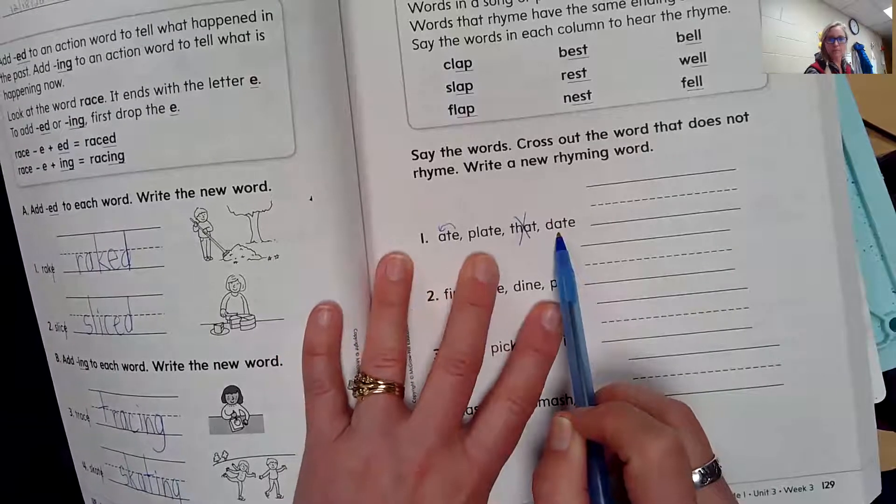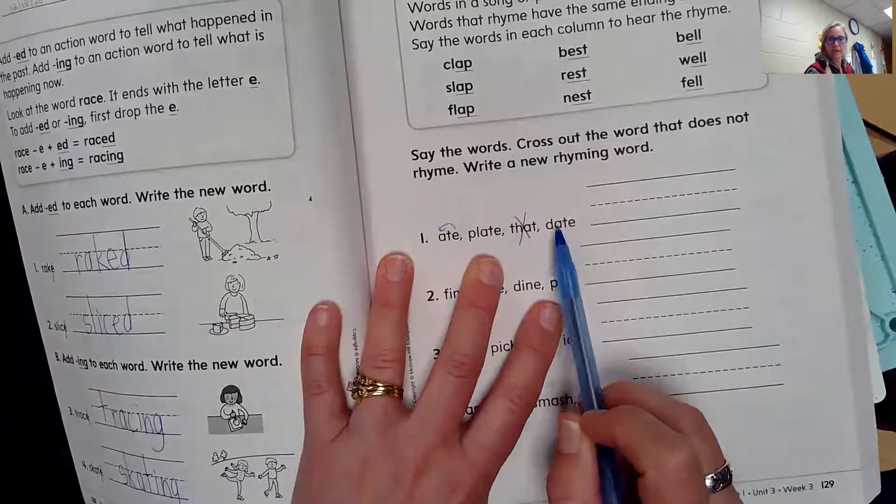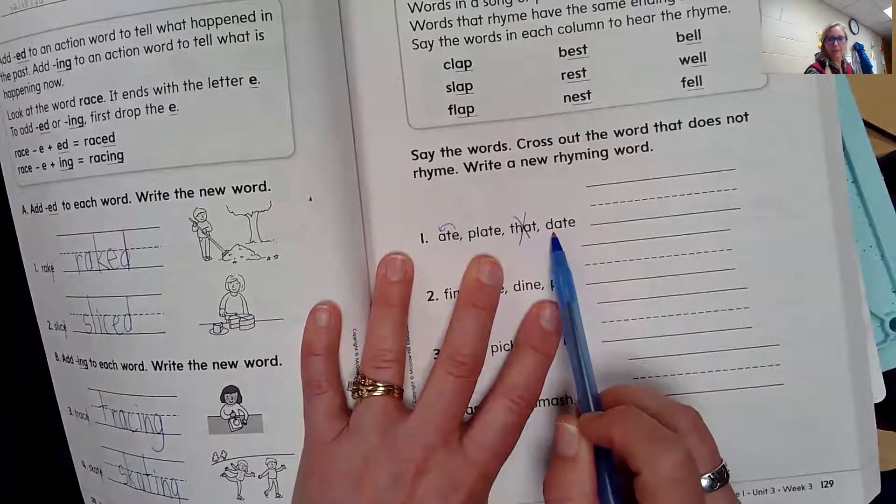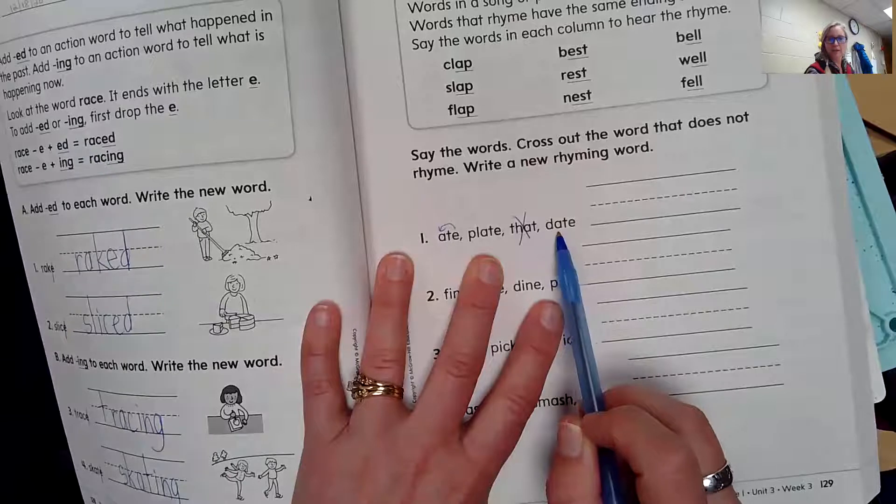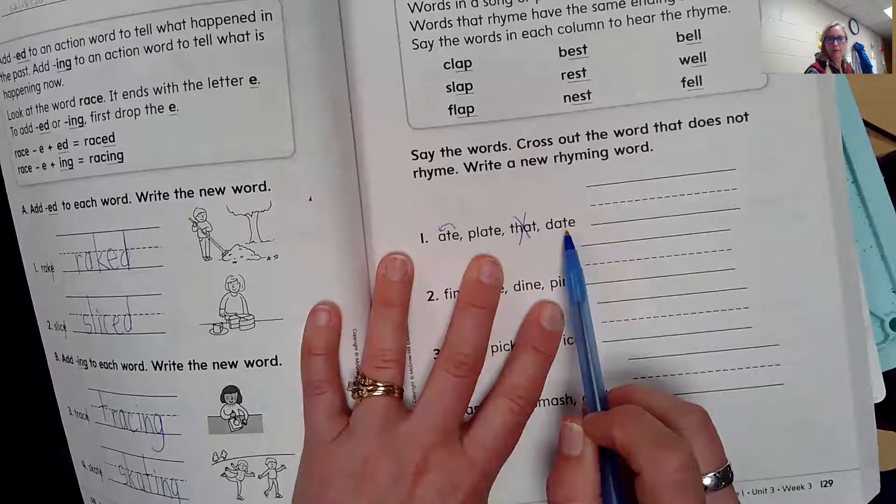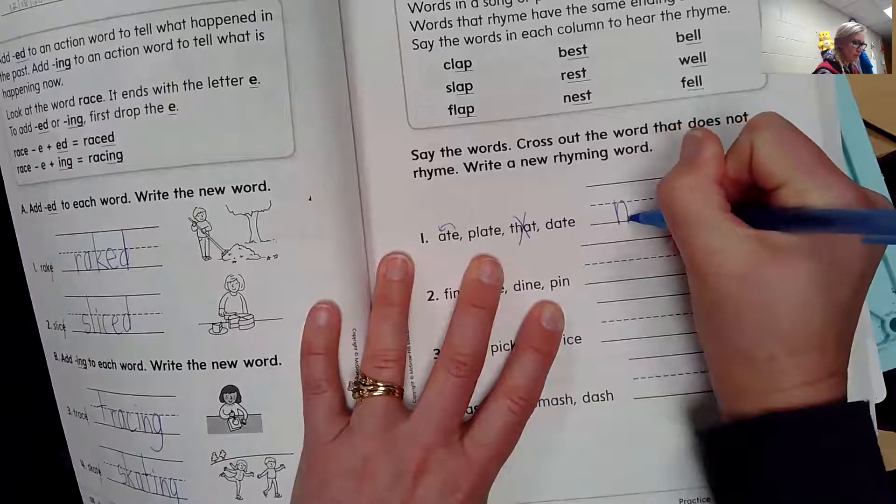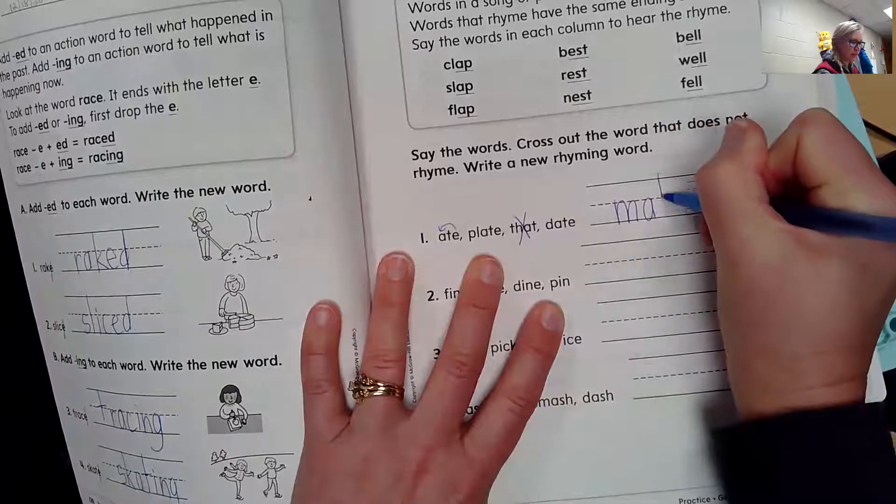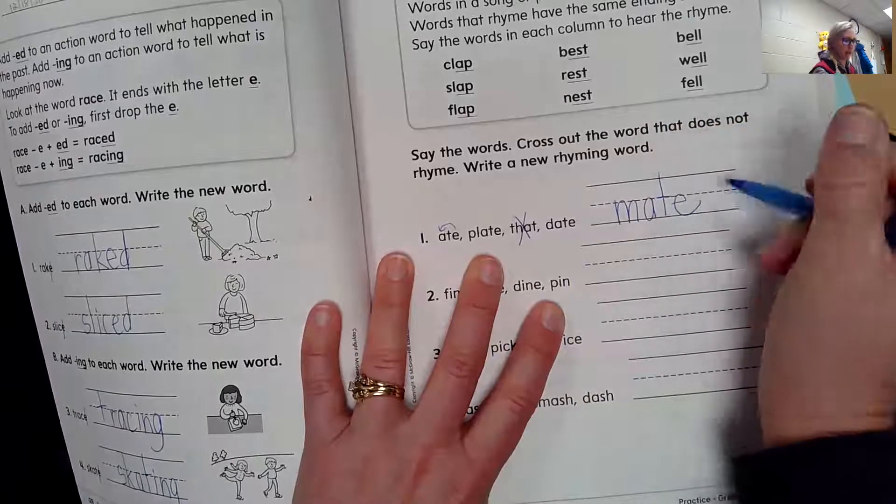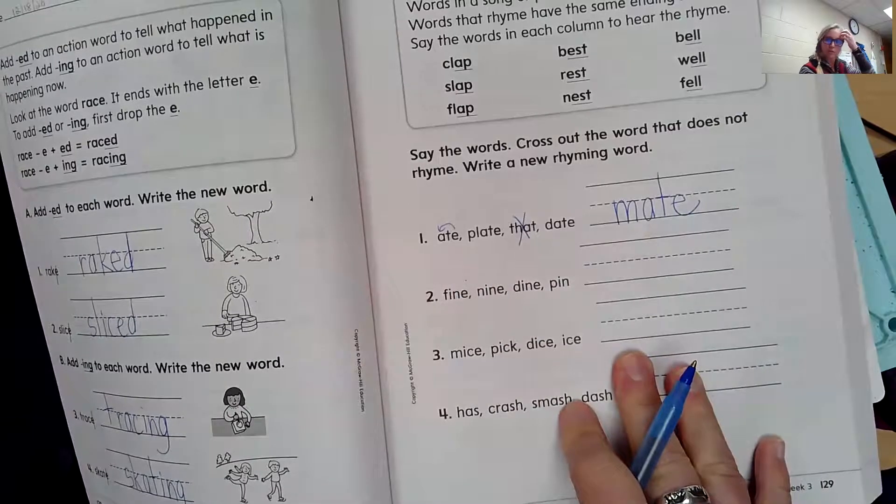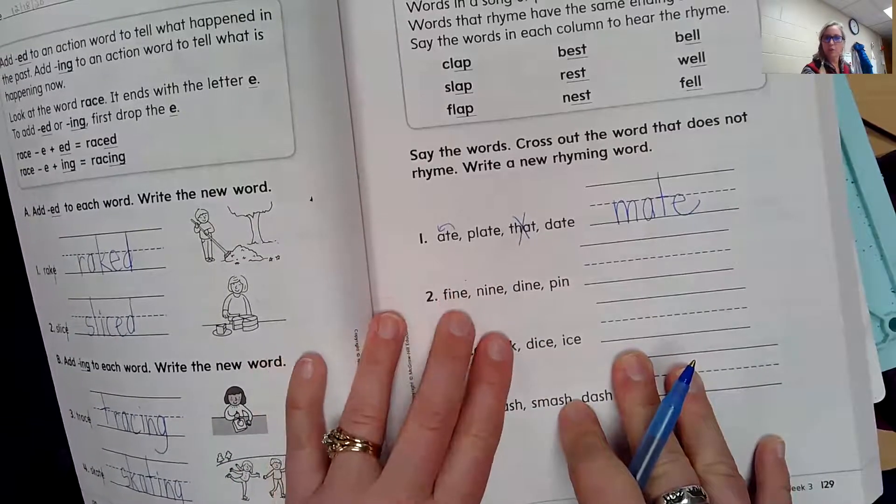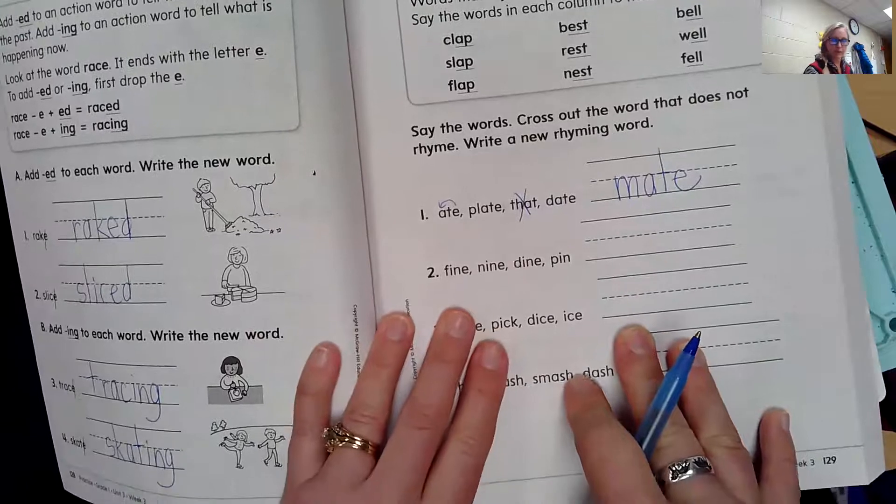So we need a new word that rhymes with eight, plate, date. Can you come up with a word? Let's change the beginning sound. We can put M at the beginning. If we put M at the beginning of 'ate', our word is mate. I'm sure there's many other words that you can come up with. If you think of a different one, write a different one.